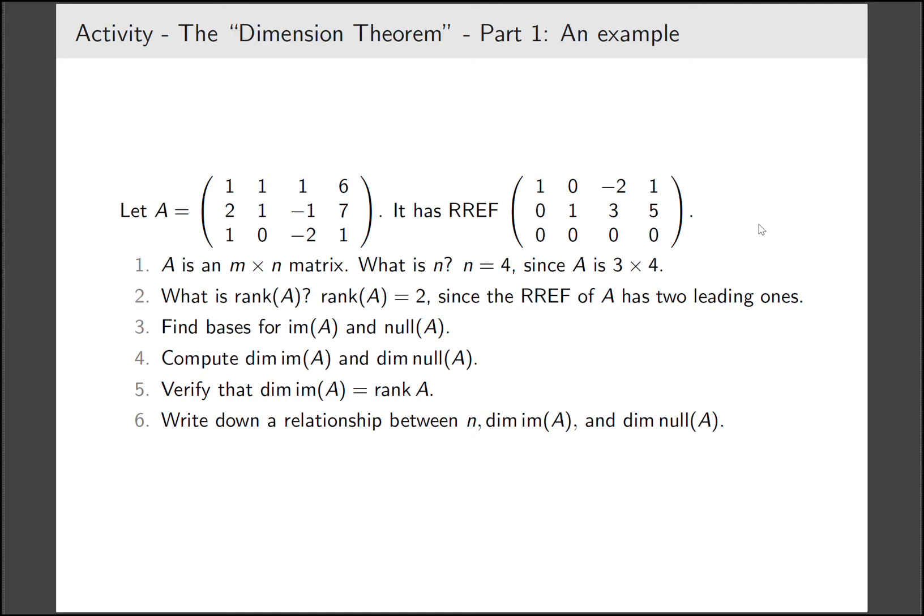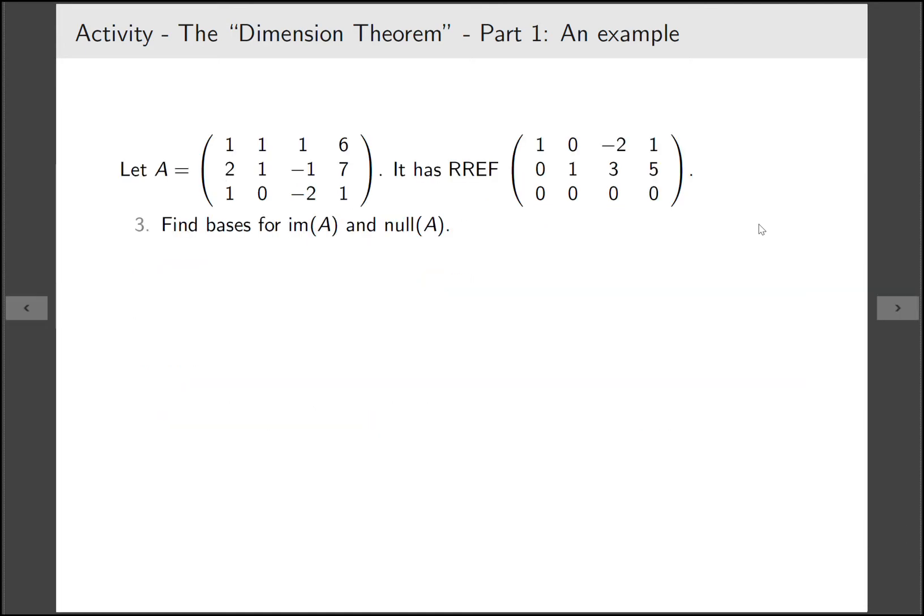Now let's find bases for the image and the null space. We'll start with the null space since it's trickier. To find the basis of a null space we need to write down all of the solutions to the homogeneous system. This is an activity we've done many times before in the course.